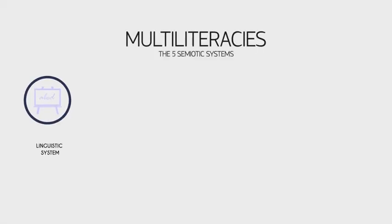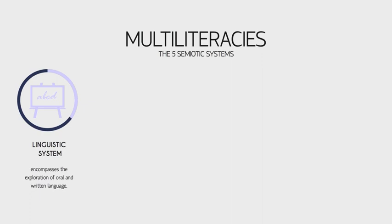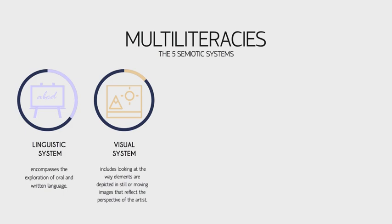The linguistic system, which encompasses the exploration of oral and written language. The visual system, which includes looking at the way elements are depicted in still or moving images that reflect the perspective of the artist.